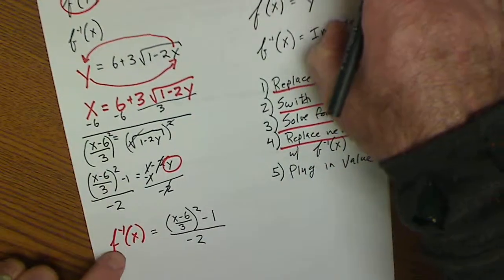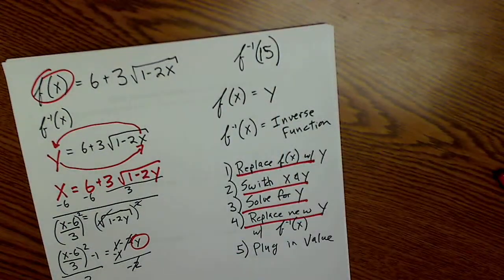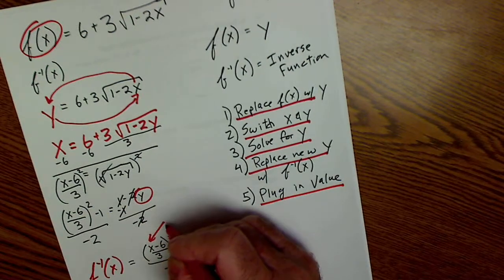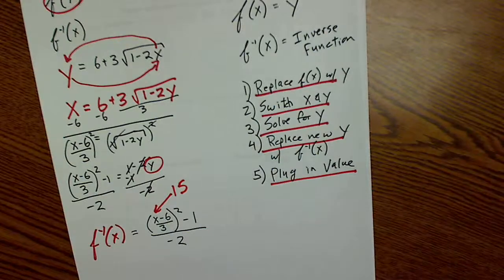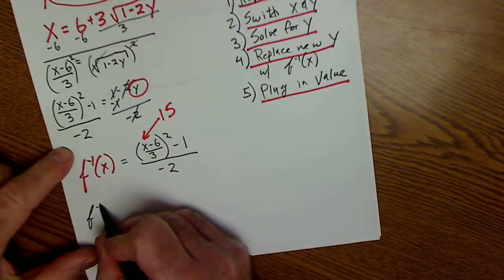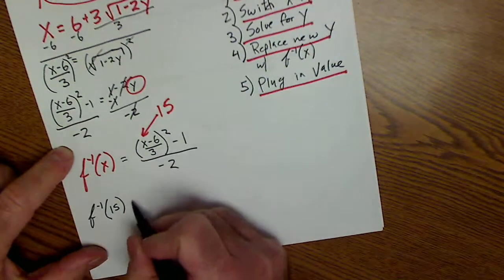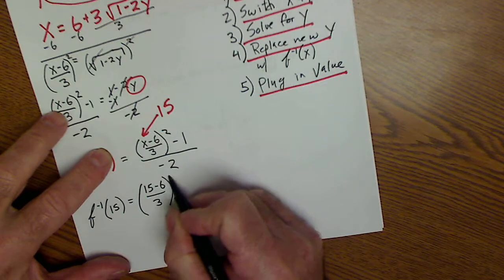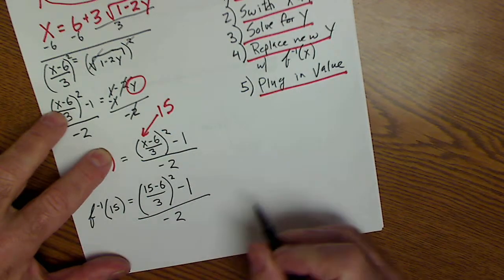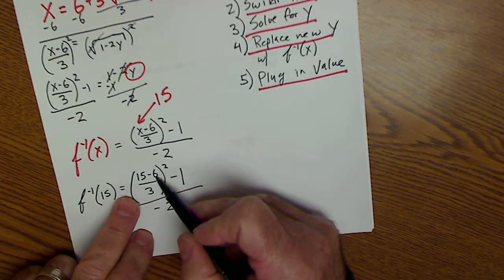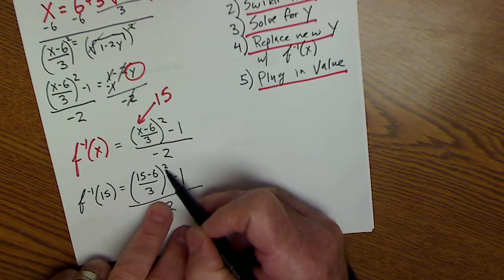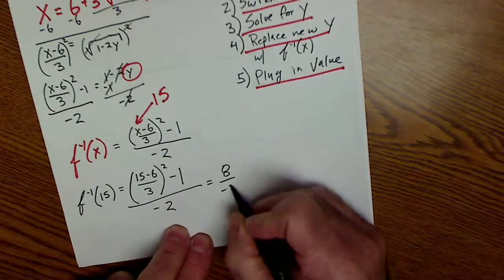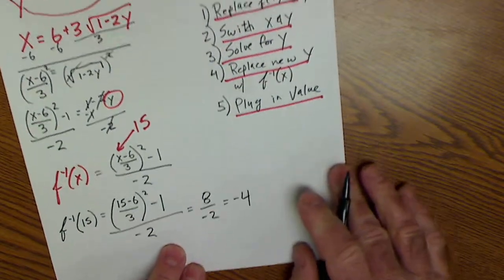Step 5 is to plug in the value of 15 — that's usually part (b) of the problem. So f⁻¹(15) = ((15 − 6)/3)² − 1, all divided by −2. That gives (9/3)² − 1 over −2 = 3² − 1 over −2 = 9 − 1 over −2 = 8 over −2, which equals −4.